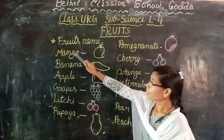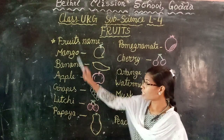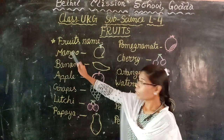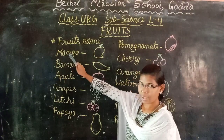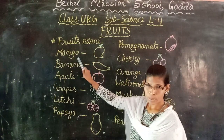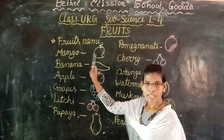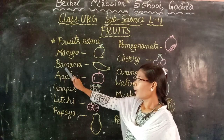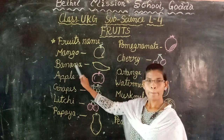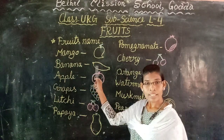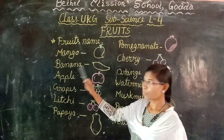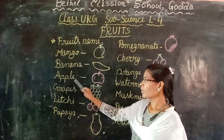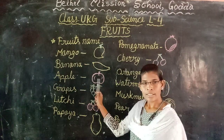So look at here. The fruit names are written with their spellings. Mango — M-A-N-G-O. Mango is yellow in color. Banana — B-A-N-A-N-A. It is yellow or green in color. Apple — A-P-P-L-E. It is red in color.